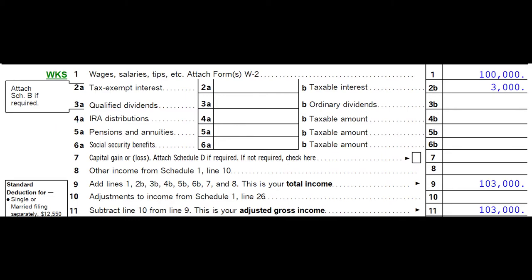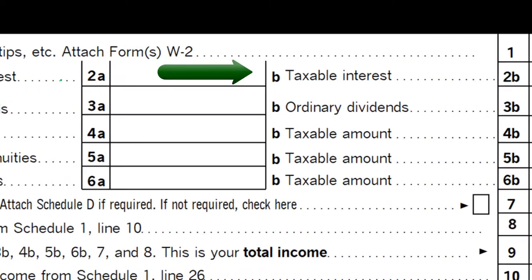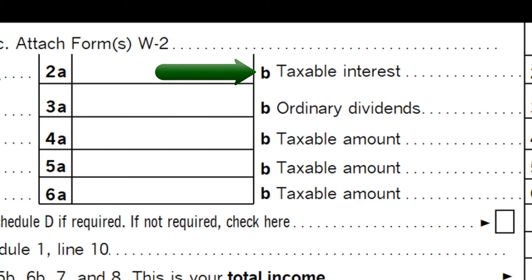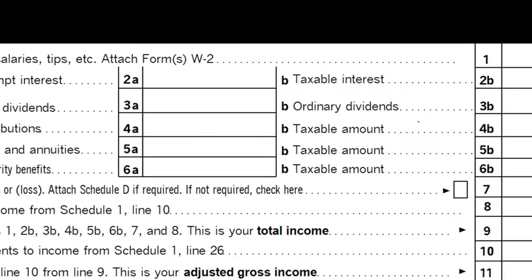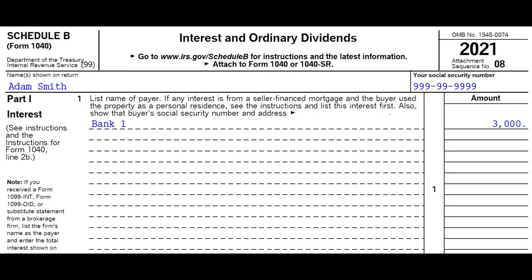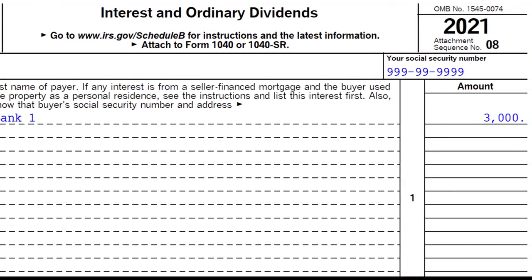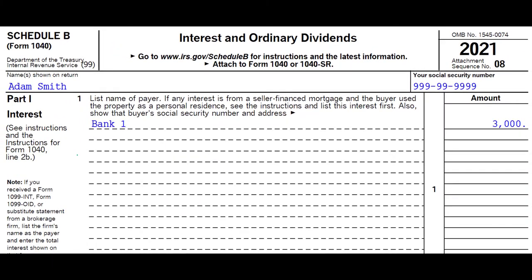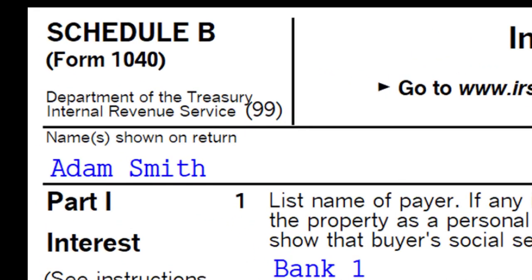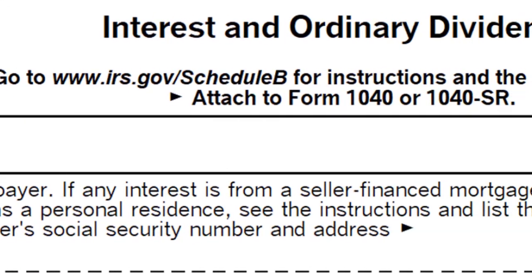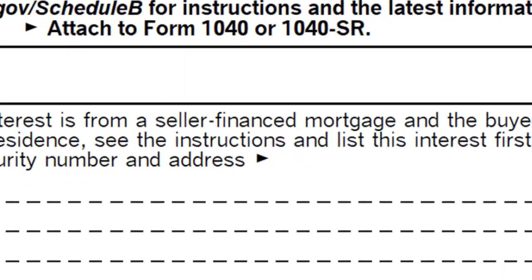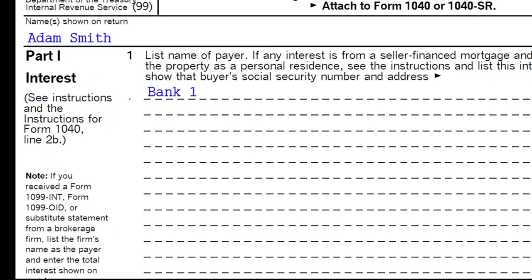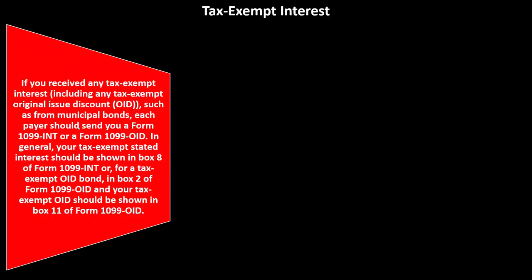On page one of the 1040, you'll see taxable interest and tax-exempt interest. Even if interest is exempt, you'd typically still need to report it on the 1040. If the total exceeds a certain threshold, it would be reported on Schedule B, which provides more detail by breaking out each bank or financial institution, with the total then pulling over to Form 1040.